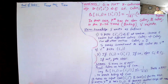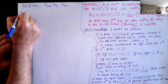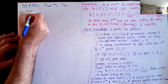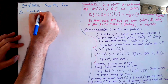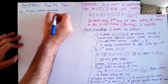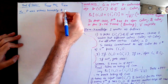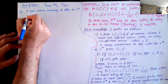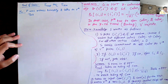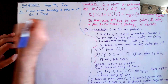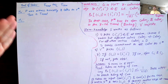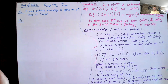In zero-knowledge, proving indistinguishability typically requires a hybrid argument. In hybrid H0, the prover P uses the witness — the three-coloring — honestly and runs the protocol with V*. The transcript produced here is τ_real. We will slowly change the way the prover behaves and arrive at τ_sim.